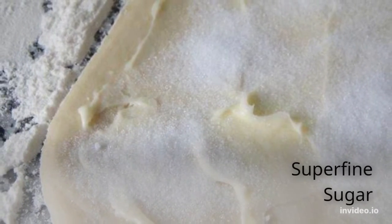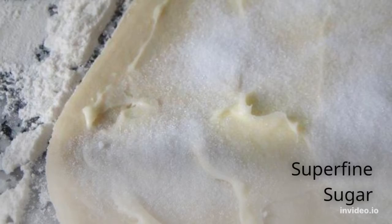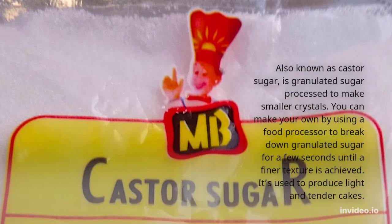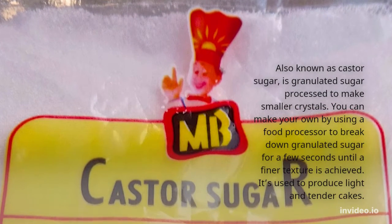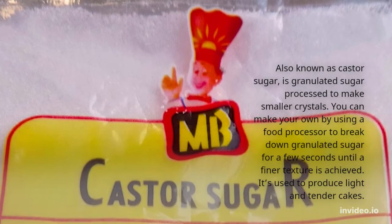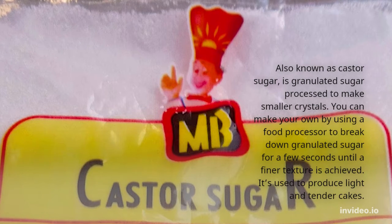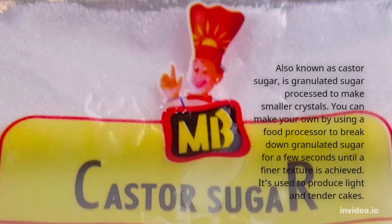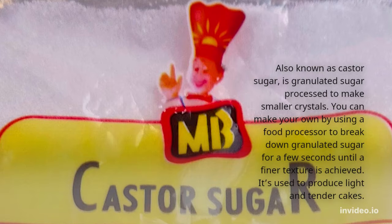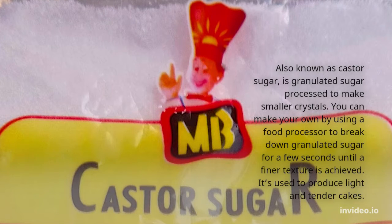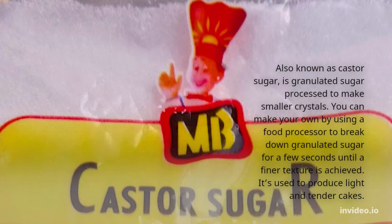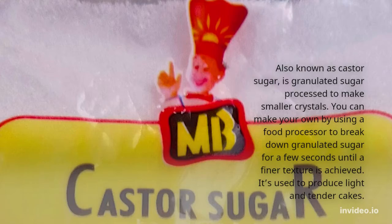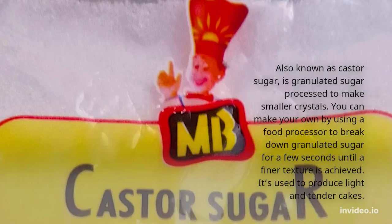Superfine sugar, also known as castor sugar, is granulated sugar processed to make smaller crystals. You can make your own by using a food processor to break down granulated sugar for a few seconds until a finer texture is achieved. It's used to produce light and tender cakes.